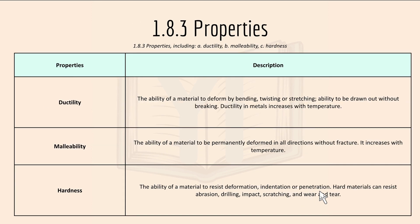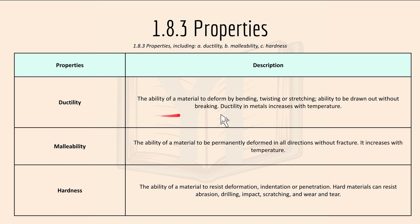Then lastly we have 1.8.3 properties. We have ductility, malleability and hardness. Ductility is the ability of a material to be formed by bending, twisting or stretching, and the ability to be drawn out without breaking.